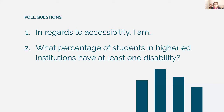The second question asked: what do you think the percentage of students in higher institutions is who have at least one disability? We had choices of 10, 20, 30, or more than 30%. The majority selected 20%, and some selected 30 or more than 30. The correct answer is more than 30%, and we're going to talk about that in a bit.